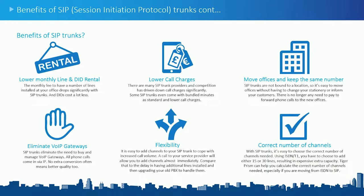If you move offices out of a geographical area, you can keep the same number, or even have a London number while based in Manchester or Birmingham. You could eliminate VoIP gateways and use a centralized SIP gateway. SIP is also flexible — you can phone up the provider and add or remove channels without somebody physically coming in and installing hardware. If you need to increase your concurrency, simply contact your provider. Tiger will help you identify the correct number of channels, telling your provider how many concurrent calls you require to make your service work for customers.